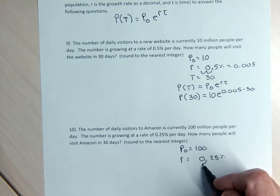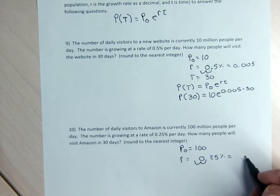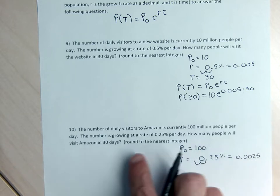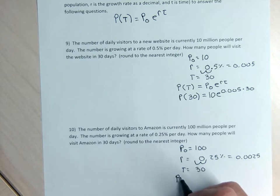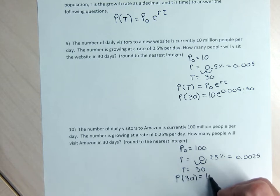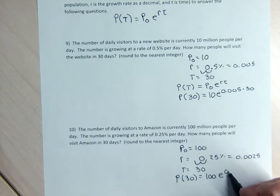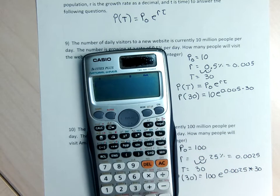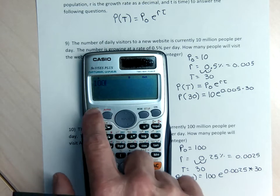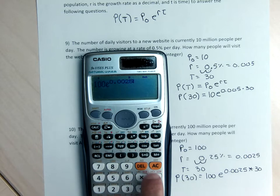I'm going to convert 0.25% to a decimal by moving the decimal over twice to get 0.0025. The question asks how many people will visit Amazon in 30 days, so T is going to be 30. My formula is P of 30 — the number of people going to Amazon after 30 days — which is the starting 100 million people times E to the 0.0025 times 30.